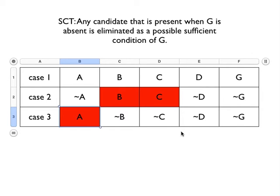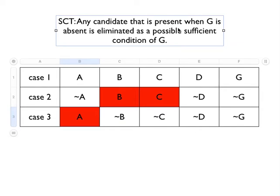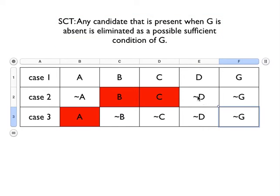That leaves open D, though, because based on the definition again, D is never present when G is absent. In any case where G is absent, D is also absent.